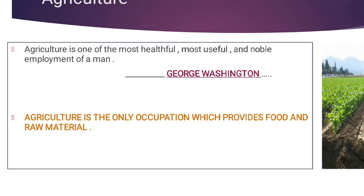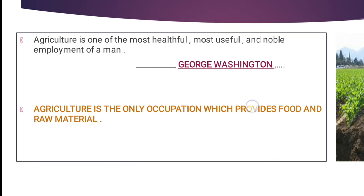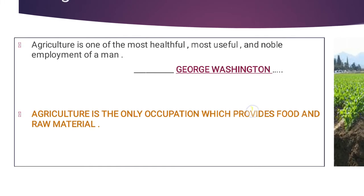Agriculture is the most useful occupation. Why is it most useful? Because food is the only matter why we work. Why do we work? Because of food — the food which we consume. Why do we consume food? Because we need nutrition, we need proteins, we need vitamins, we need energy. And how do we get this energy? Through agriculture. This is why Washington told us that agriculture is most useful.